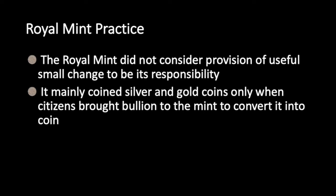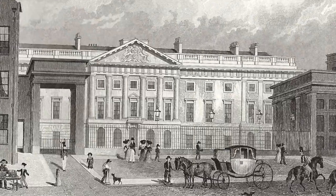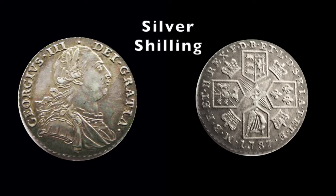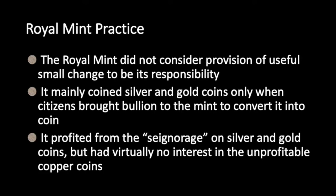It may seem odd to us today, but the Royal Mint in London that struck most of the coins for the British Empire did not consider the provision of a useful currency for the economy to be its main purpose. It mainly struck silver and gold coins only when people brought bullion to the mint for coinage. The government profited from the small difference between the face value of the coins and the bullion value — something called seigniorage — so coinage was a sort of tax on bullion. The mint didn't really produce enough copper coins for the demand, and struck no copper coins at all in the years following 1775.